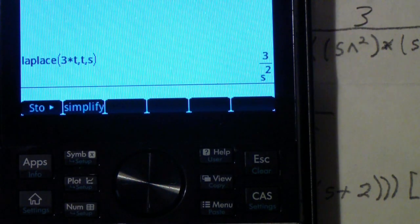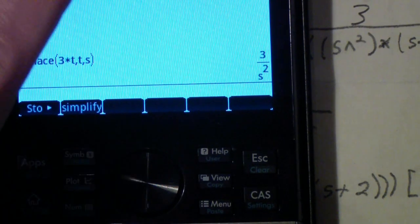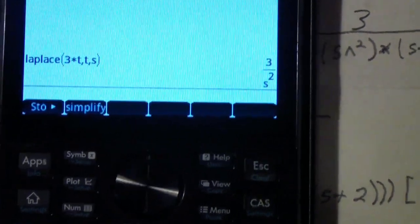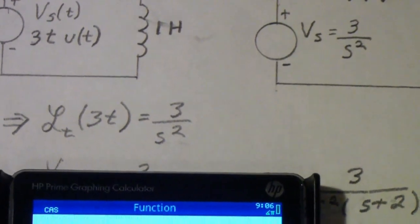You get the correct answer expressed in terms of s. In other words, 3 over s squared, which as you probably remember from the problem is the correct Laplace transform.